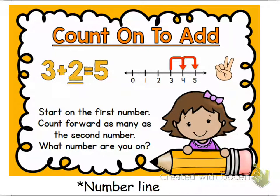So next one, count on to add. For this 3 plus 2 equals 5, you start with the first number. You count forward as many as the second number is, and then you see what number you're on, and that's when you use a number line.